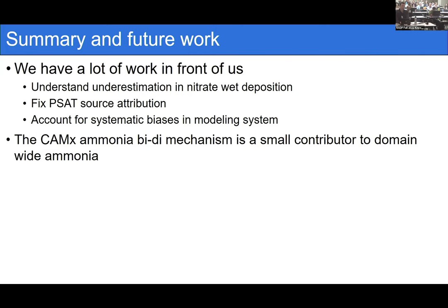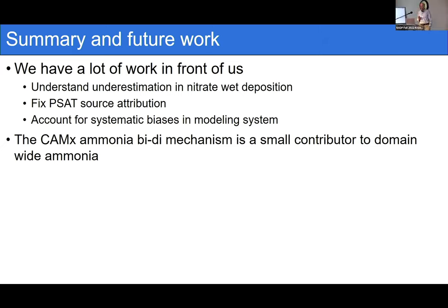A question about whether the bidirectional flux erasing source signatures could account for the missing mass in source apportionment. Response: If we are properly tracking the bidirectional contribution, it's only 3%, which is too small to account for the missing mass. Thanks Brett.